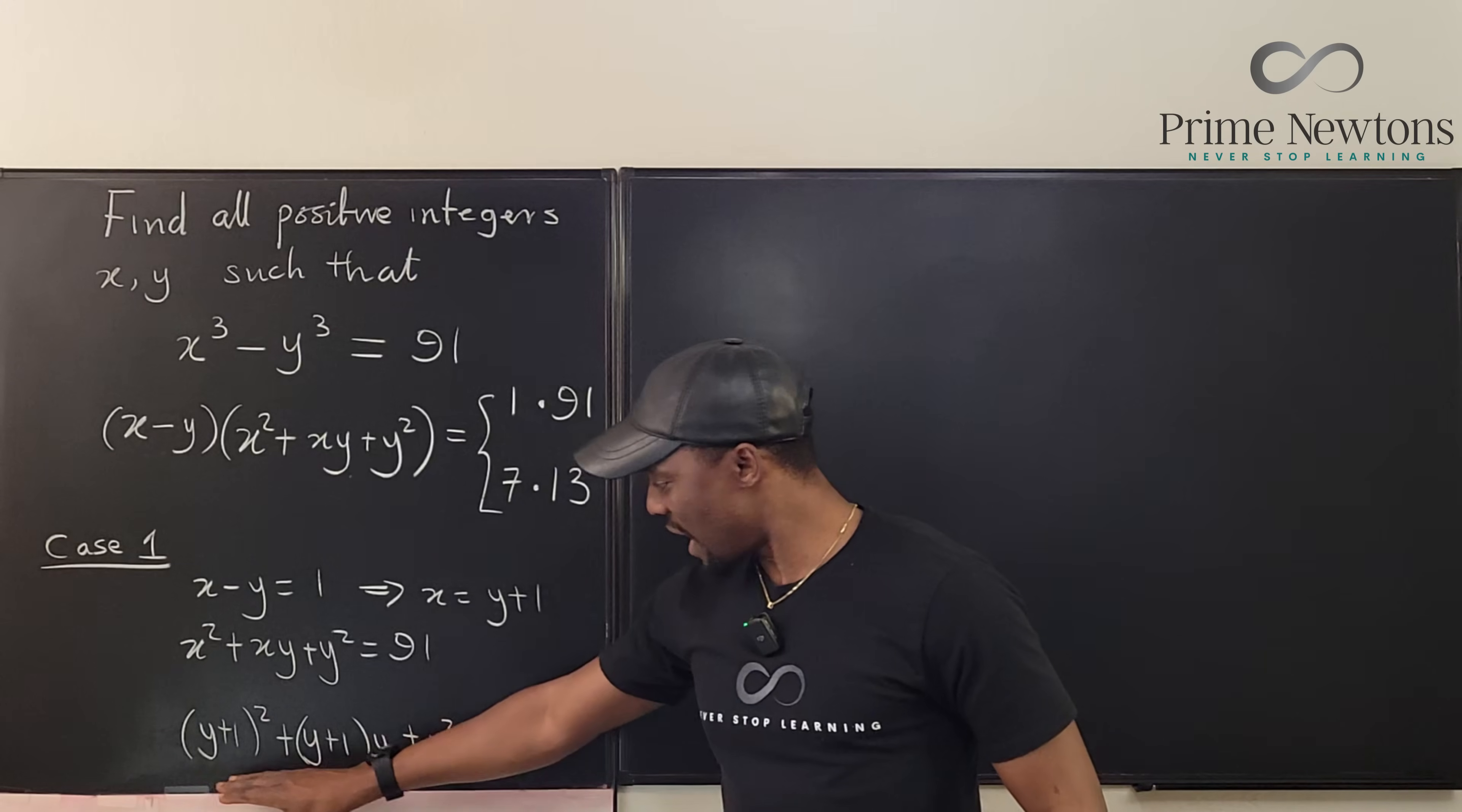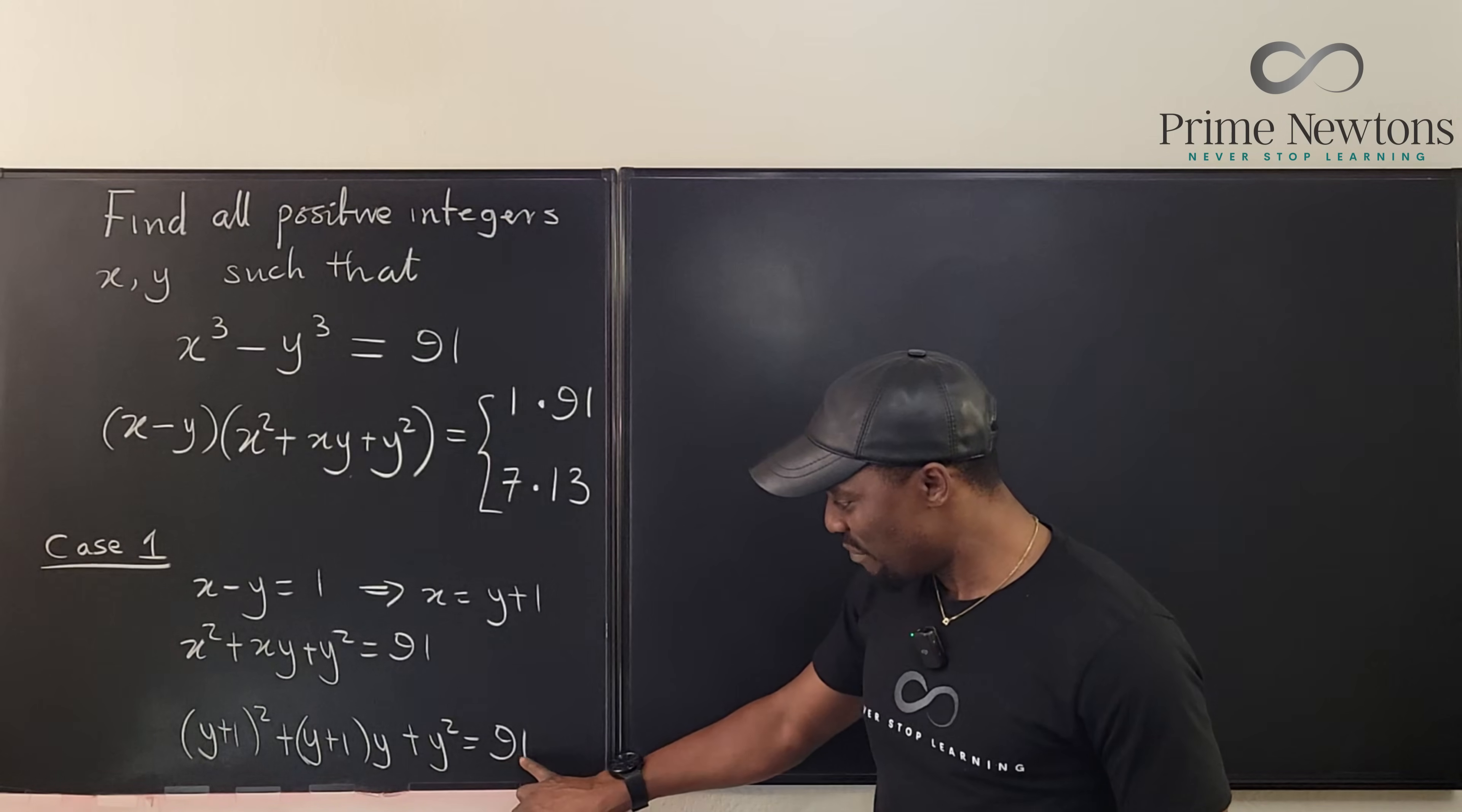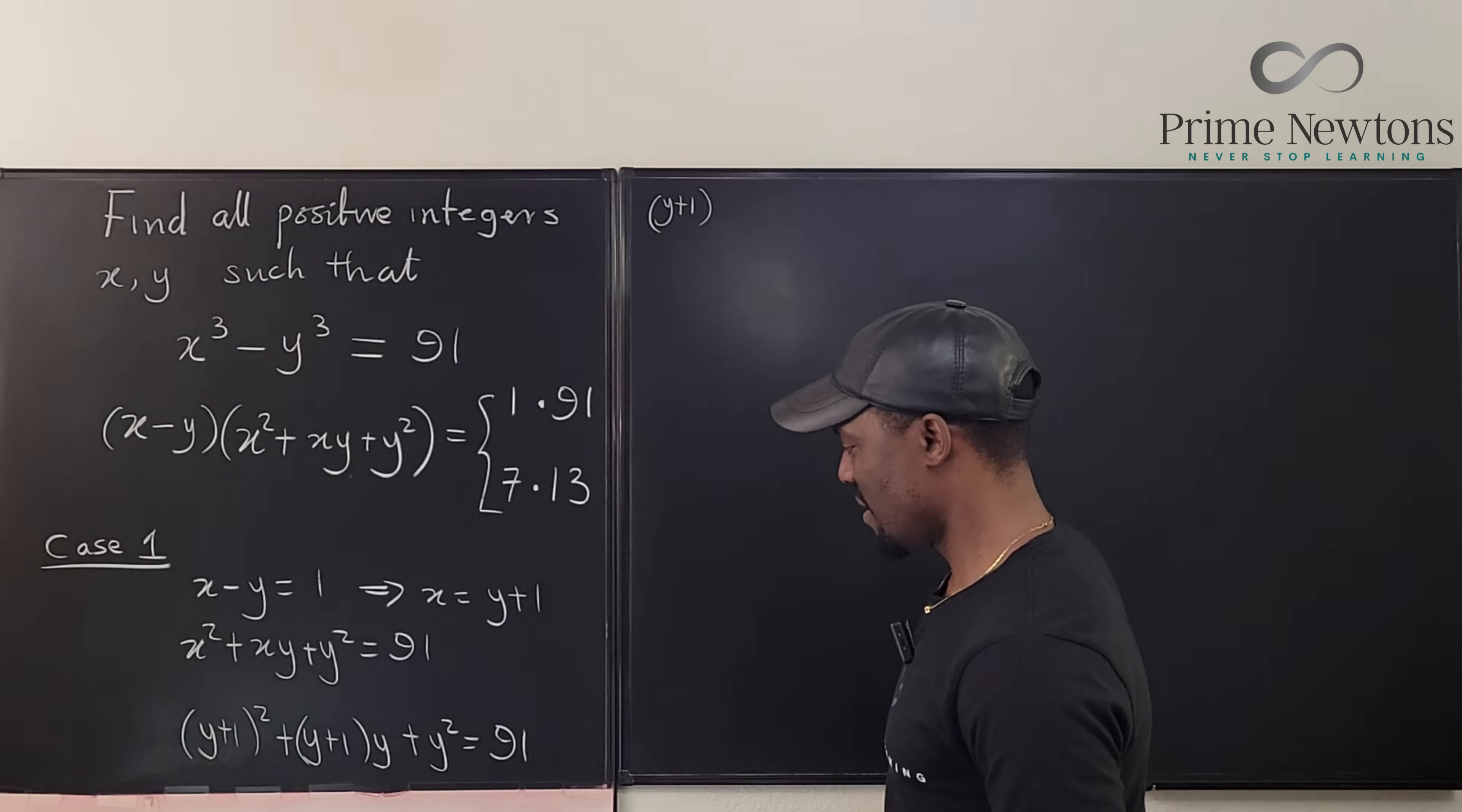You can square and then combine the like terms. But I can already see y plus 1 here. I see y plus 1 here. I don't see y plus 1 here yet. But if I borrow one from here and move this one here, I'm going to get y squared minus 1, which is the difference of two squares. Or maybe I should just square everything.